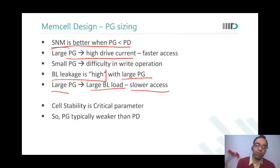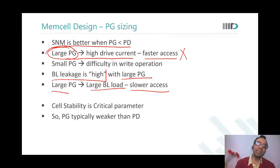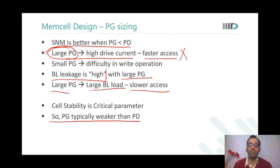If you keep a large pass gate to have faster access, that is really not going to help. Since cell stability is a very critical parameter, we conclude that the pass gate is to be kept weaker than the pull down. So whatever we discussed in the figures of merit, I am summarizing them now for sizing the devices in a memory cell.